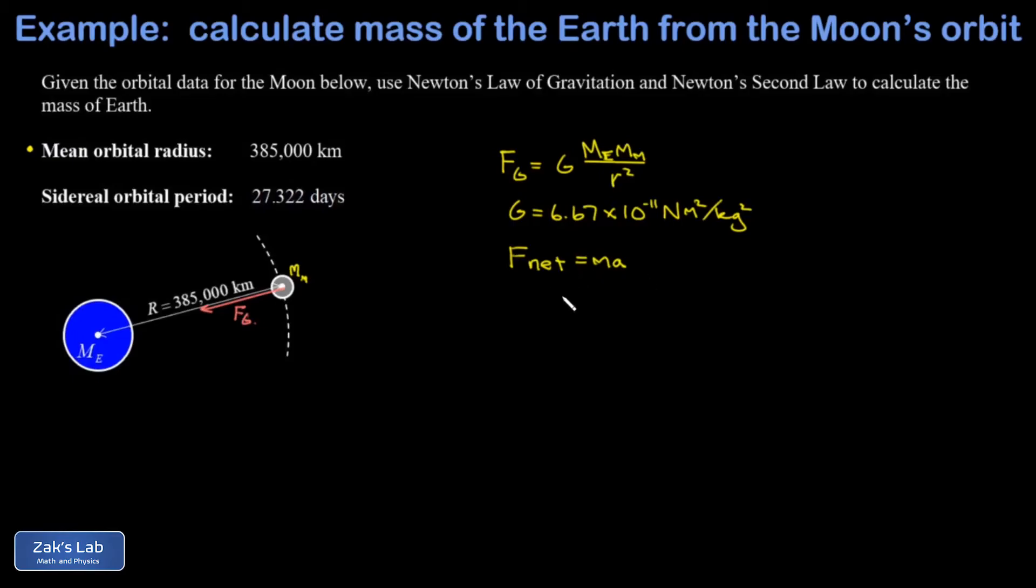Then we simply apply Newton's second law to the Moon, so I have F_net = ma. And there's only one force acting here and it's the gravitational force, and the Moon is the thing that's accelerating, so I have the mass of the Moon times its acceleration. Now the acceleration in this case is a centripetal acceleration. I could write that as v² over r.